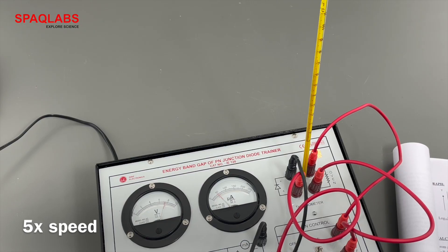Then plot the graph. From the graph you will get the slope. Put the value of the slope in this equation, and you will get the energy band gap.